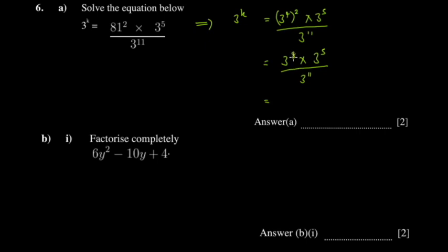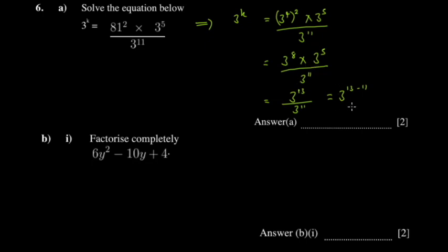The reason we changed 81 to base 3 is so that we can add the indices. Since the bases are the same, 3 to the power 8 multiplied by 3 to the power 5 gives 3 to the power 13. Then dividing: 3 to the power 13 divided by 3 to the power 11 equals 3 to the power (13 minus 11), which is 3 to the power 2. The general rule: when multiplying, add the powers; when dividing, subtract the powers — but the bases must be the same. So 3 squared equals 9.